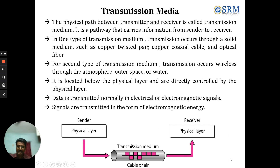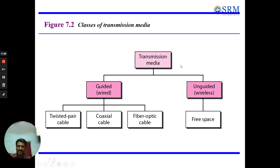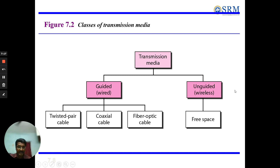Transmission media are broken down into two subclasses: guided and unguided. Guided is a form of wired medium, whereas unguided is a form of wireless medium. Under guided, there are three subclasses: twisted pair cable, coaxial cable, and fiber optic cable. Under unguided, being wireless, it uses free space.